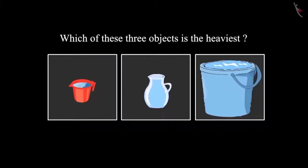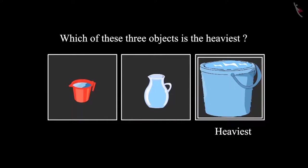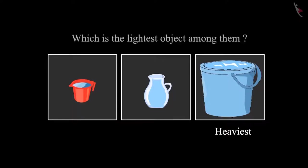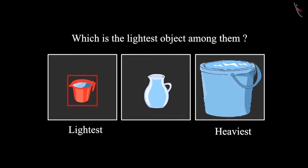So children, can you tell me which is the heaviest object among the bucket, jug, and mug? Yes, the bucket of water is the heaviest among these. And which is the lightest object among them? The mug is the lightest among them.